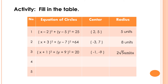For item number 4, the given equation is the quantity of x minus 4 squared plus the quantity of y plus 5 squared is equal to 13. The value of h is 4, the value of k is negative 5, and the value of r squared is 13. So the center of the circle is (4, negative 5), and the radius of the circle is square root of 13 units.